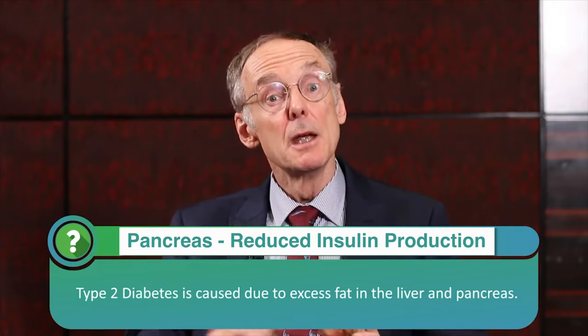In the liver it causes insulin resistance; in the pancreas it prevents the acute insulin secretion we all rely on after meals. So now that we have this very clear grasp that we're dealing with a simple disease — it's a homogeneous disease, obviously in a heterogeneous population, but the disease itself is homogeneous — too much fat.